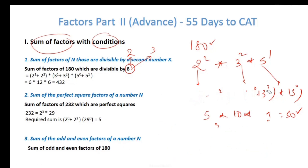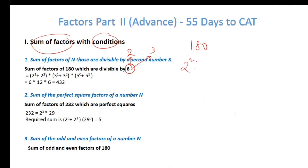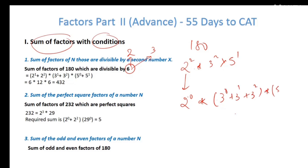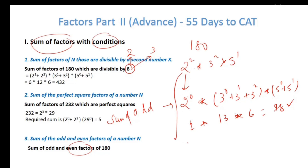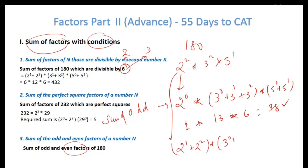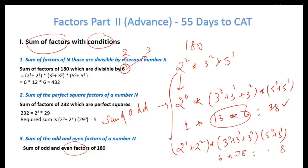Sum of odd and even factors of a number. For 180 = 2² × 3² × 5¹, for odd factors we can only take 2⁰ — any other power of 2 would make it even. So it's 2⁰ × (3⁰ + 3¹ + 3²) × (5⁰ + 5¹) = 1 × 13 × 6 = 78. For even factors, we take 2¹ and 2², giving (2 + 4) × (1 + 3 + 9) × (1 + 5) = 6 × 13 × 6 = 468.